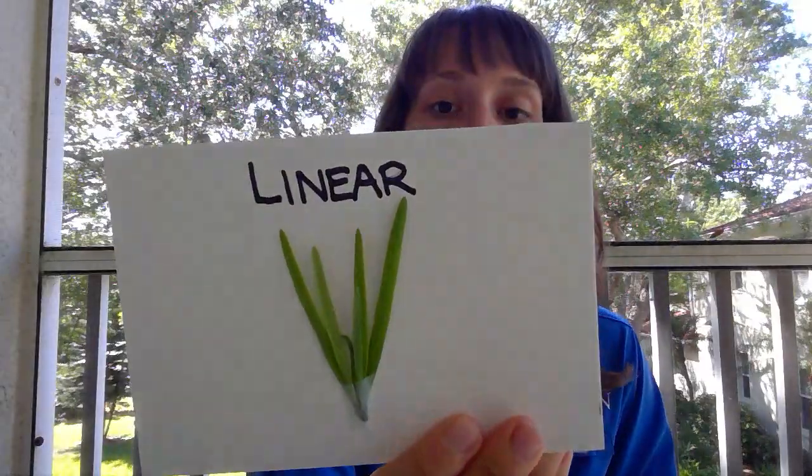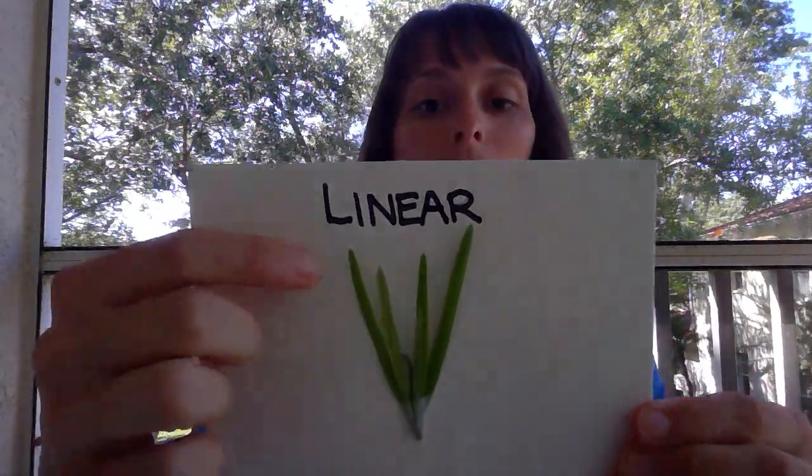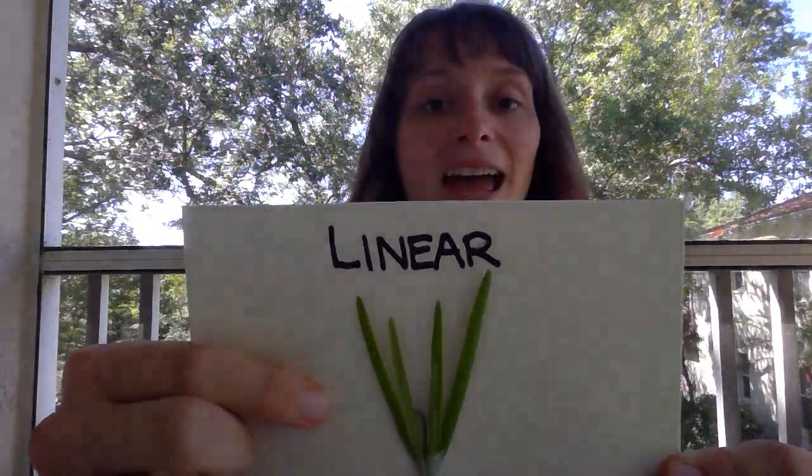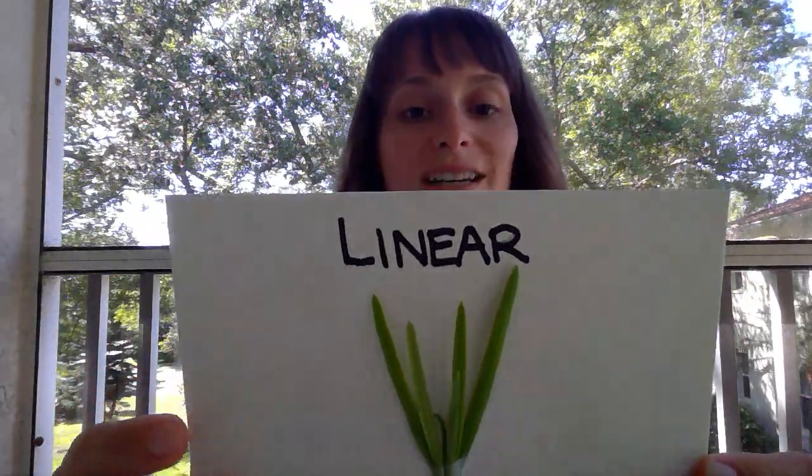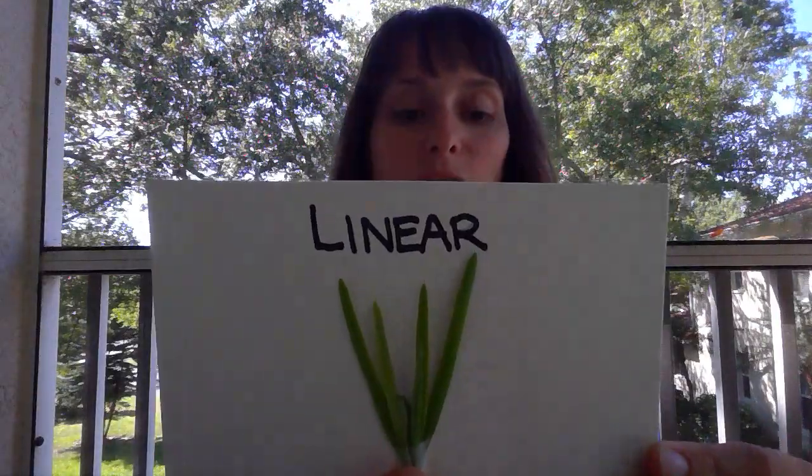Now when it comes to leaf shape, there are lots and lots of different shapes of leaves. It can all get kind of complex, but I'm just going to go over five basic, easy-to-identify shapes. The first one is called a linear shape. Linears are long and thin — they look just like a blade of grass, so these are really easy to identify as far as leaves go.